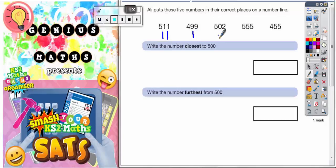From 500 to 502 is 2. From 500 to 555 is 55. And from 500 to 455, if you can do it in your head, that's great. You should get that it's just 45.